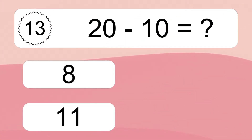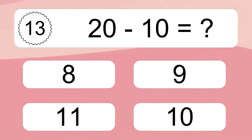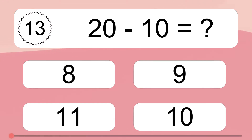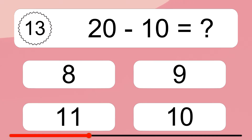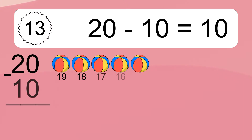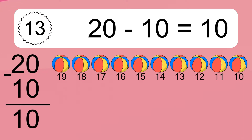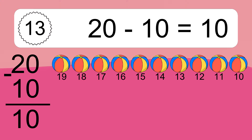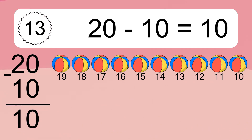20 minus 10 equals what? 20 minus 10 equals 10. Let's count it: 19, 18, 17, 16, 15, 14, 13, 12, 11, 10.